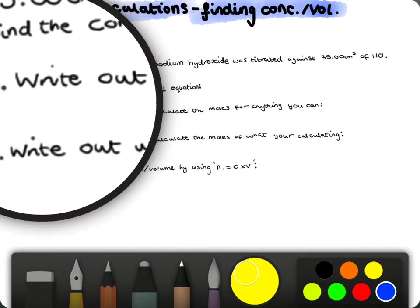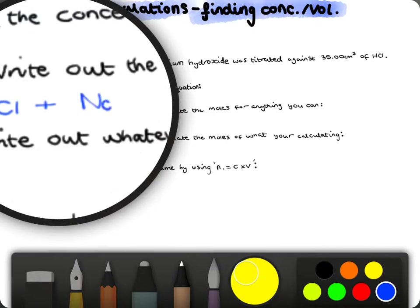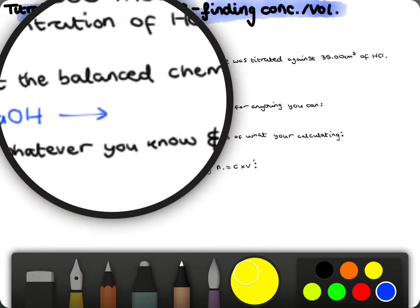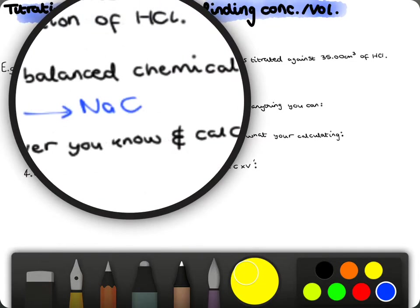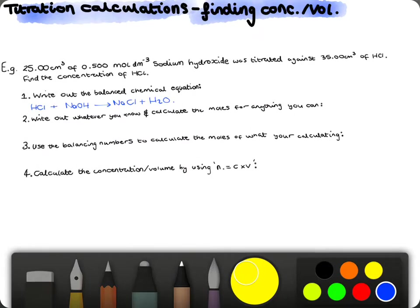So, we know that HCl plus sodium hydroxide is just a simple acid-base reaction, and this is going to form sodium chloride plus water. And I know that you know that, because that's pretty much AS standard.